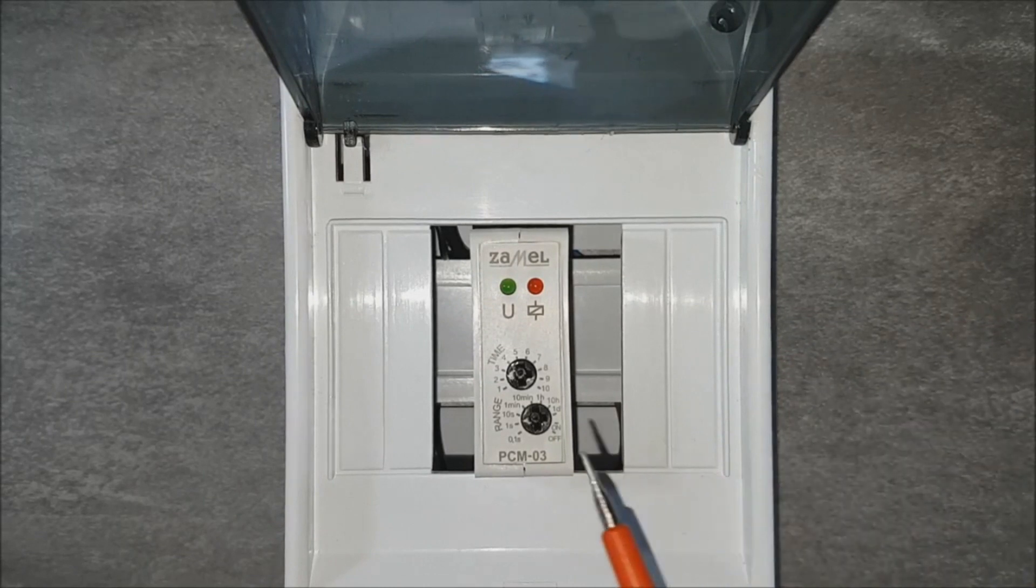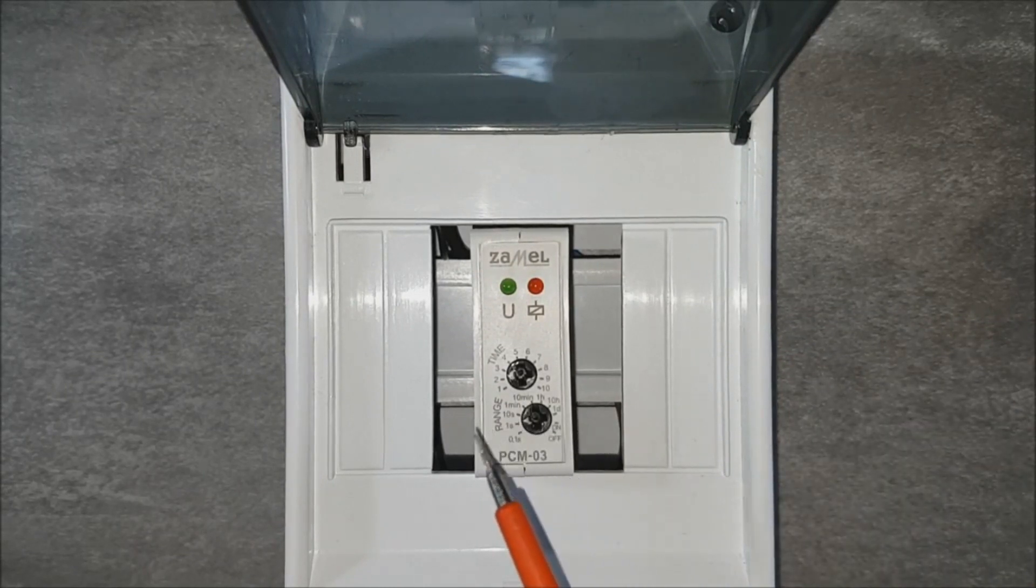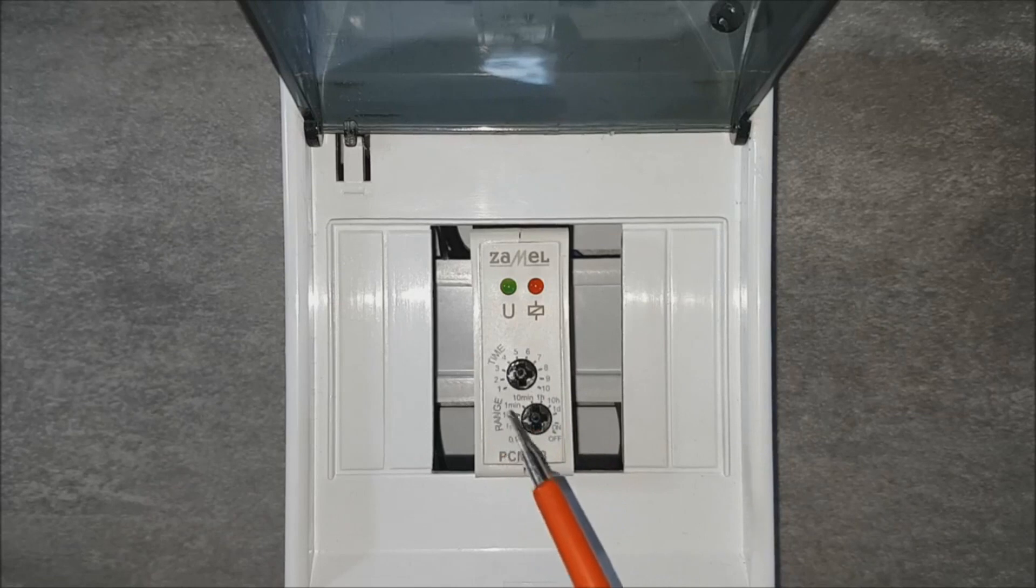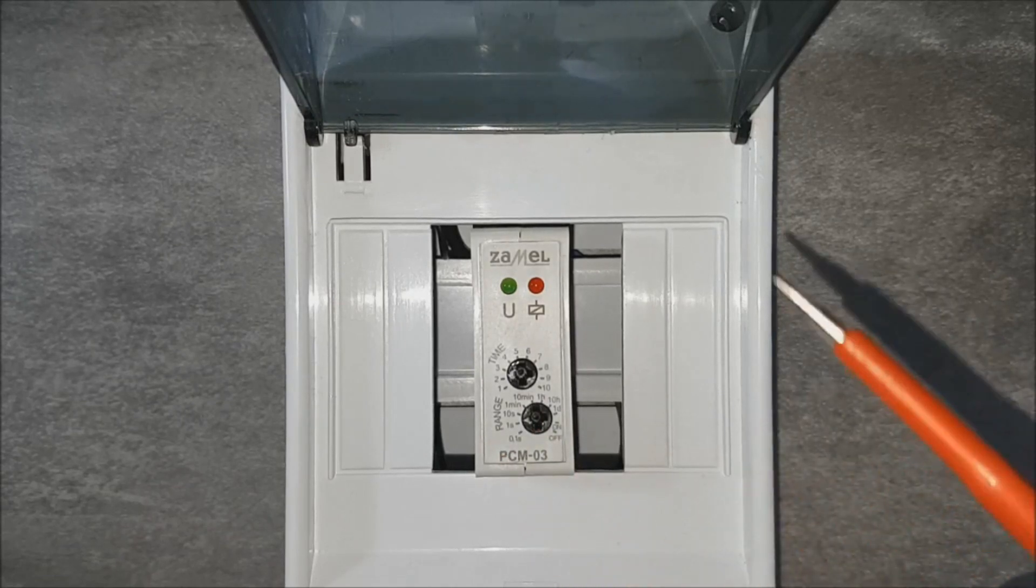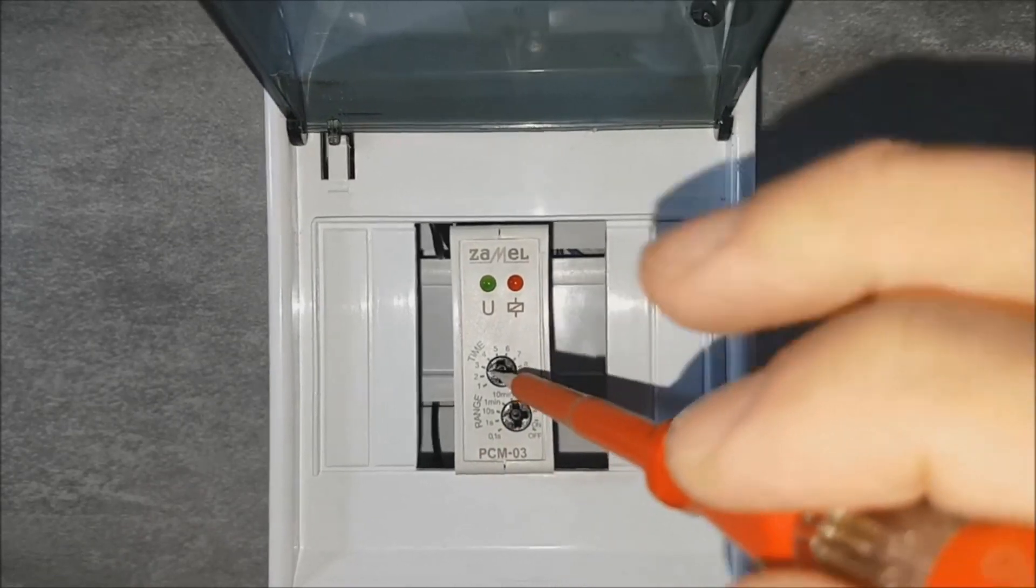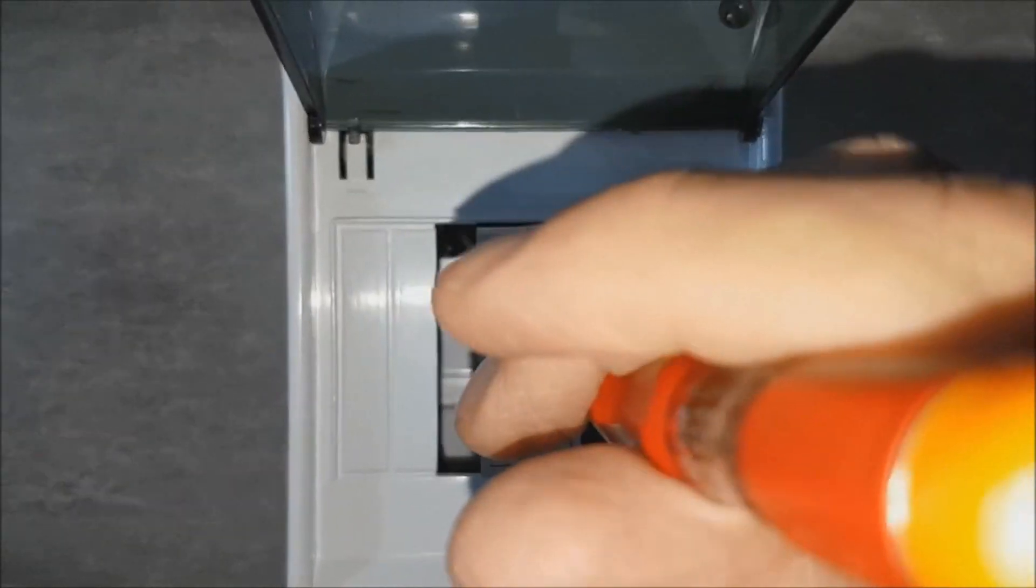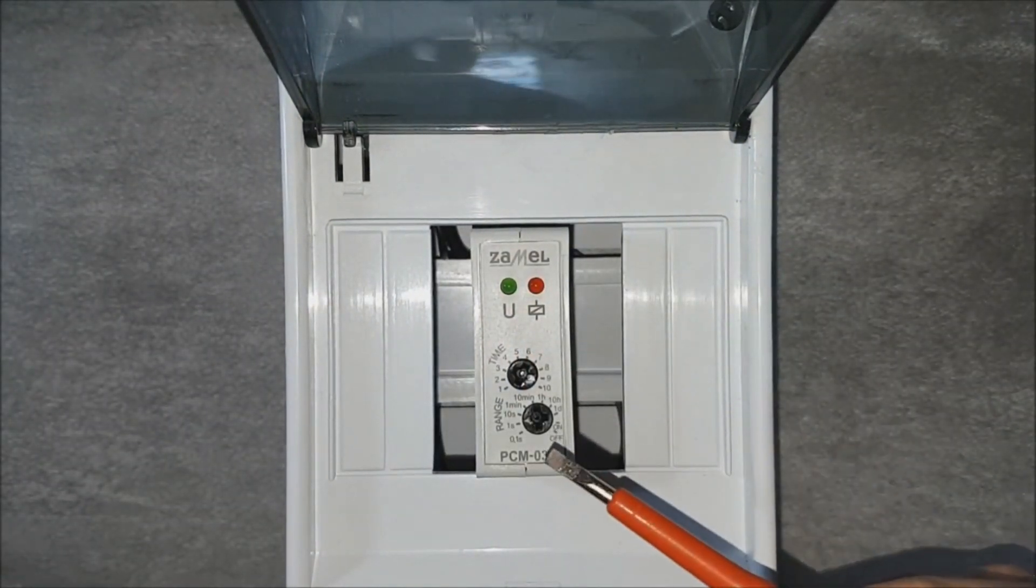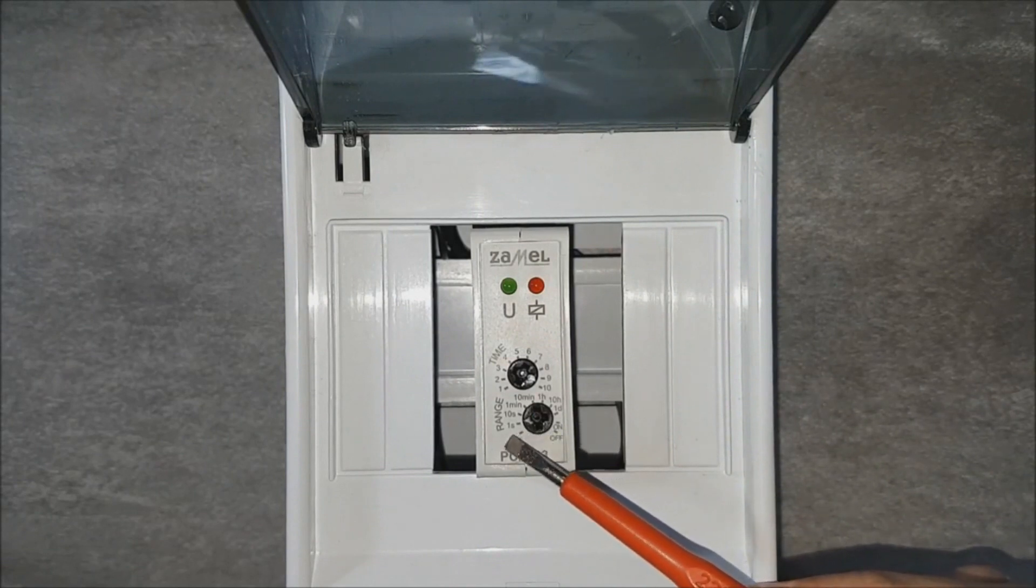Then the value selected on the range potentiometer multiply by the value selected on the second potentiometer. In this video the value will be 10 units. As the result, 1 second multiplied 10 times gives 10 seconds.